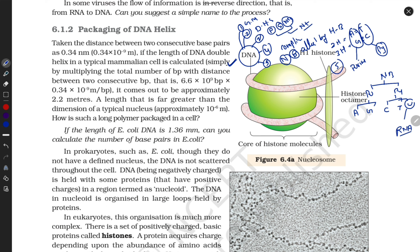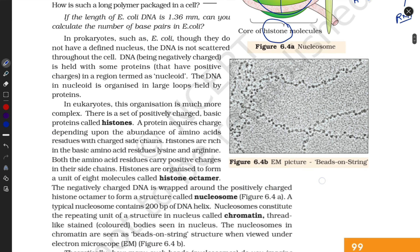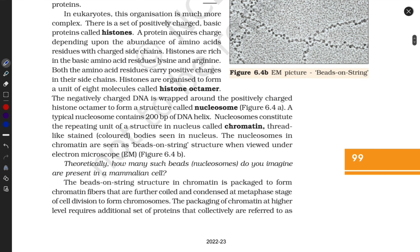Now we know everything about DNA. Next, what is this circular structure? We call it a histone octamer. Let me discuss what you understand by histone octamer and how it forms.